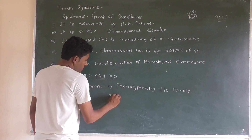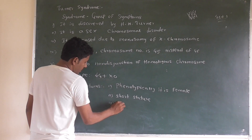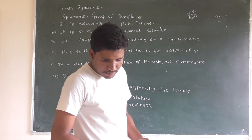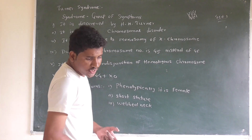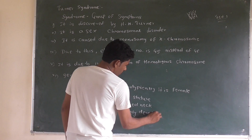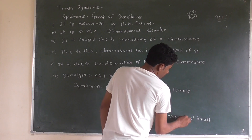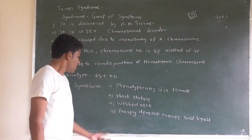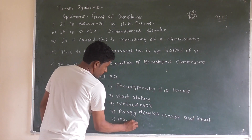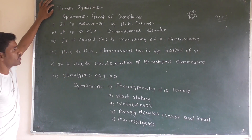Phenotypically the Turner syndrome patient is female. Symptoms include short stature, webbed or short neck, poorly developed ovaries, and underdeveloped female primary and secondary sexual characters such as breast development. Intelligence quotient is low and intelligence powers are reduced.